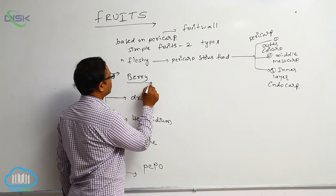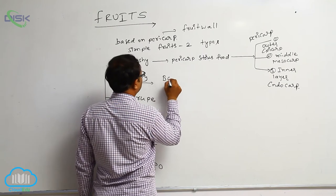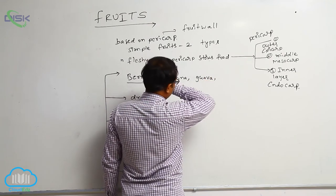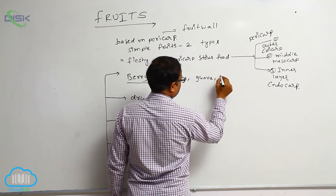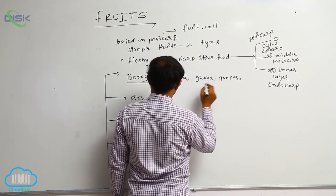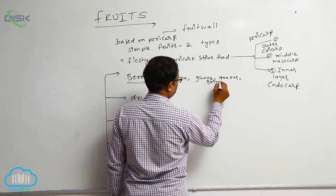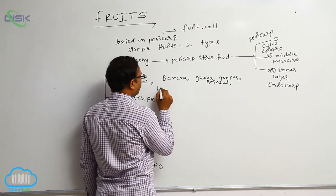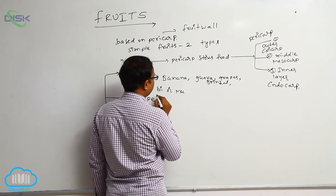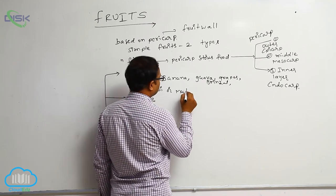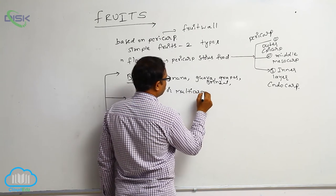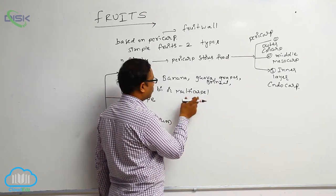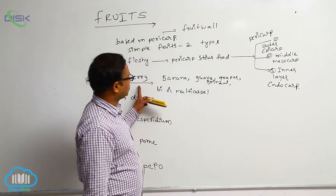Berry — examples include banana, guava, grapes, brinjal, and tomato. Berry fruit is formed from bicarpel or multicarpel ovary, meaning two or many carpels. It is known as a bilocular or multilocular ovary, and that is known as berry.